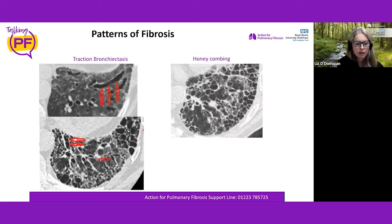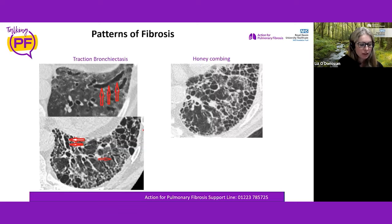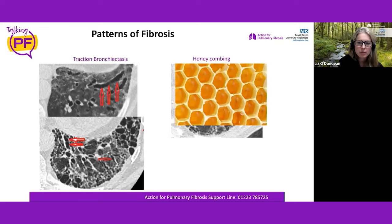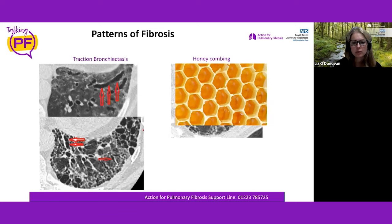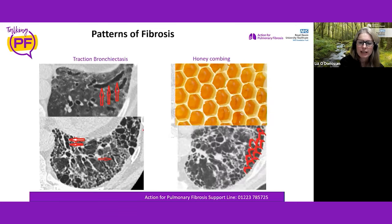Honeycombing is another feature characteristic of established fibrosis, and is a very important criterion when diagnosing certain types such as usual interstitial pneumonia or IPF. We see thickened circular cysts stacked on top of each other at the edge of the lung — like a honeycomb. If a report mentions honeycombing, that's what we're seeing.